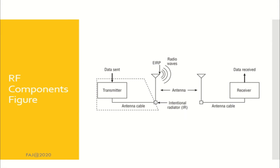Next, the Radio Frequency Components figure. There are transmitter, receiver, antenna, EIRP, and IR. I will briefly explain each component.